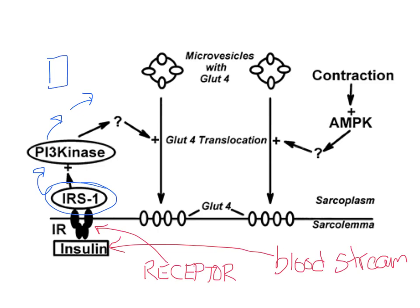Think of this as dominoes. So here's your first domino, and you have another domino set up right after it, and another domino, and another domino. So once the first thing happens, we start the dominoes falling. The dominoes lead to a particular function, and that function is the upregulation of GLUT4 on the plasma membrane.